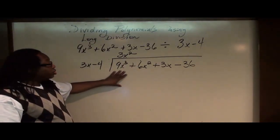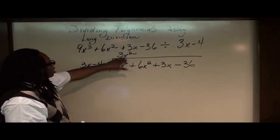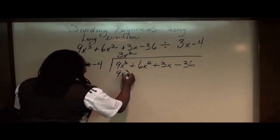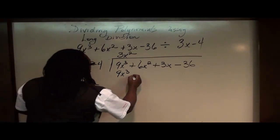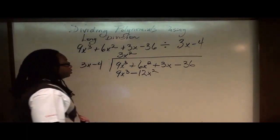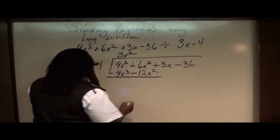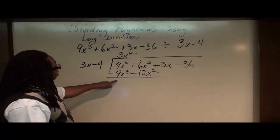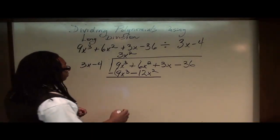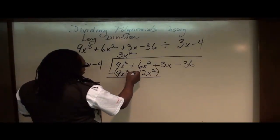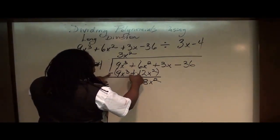Now that we know what number goes into 9x cubed, we have to multiply this number by the entire divisor here. 3x squared times 3x gives us 9x cubed, and 3x squared times minus 4, or negative 4, gives us negative 12x squared. Again, just like long division using regular numbers, we subtract. But 9x cubed minus 9x cubed is 0. But what's interesting here is that we see we have a negative here and a negative number here. That makes this 12x positive. And so in fact, this is now 6x squared plus 12x squared, giving us 18x squared, because we had those two negative numbers there.